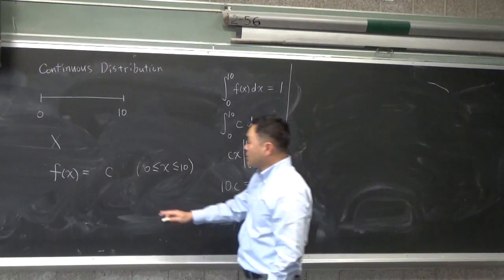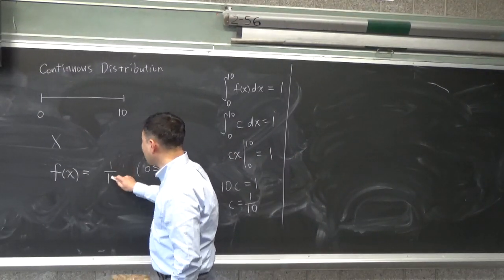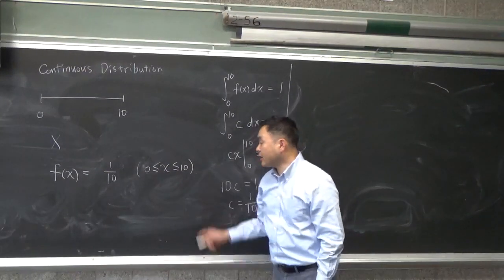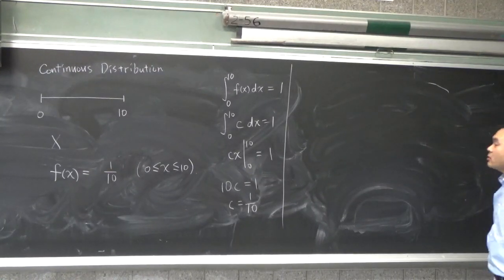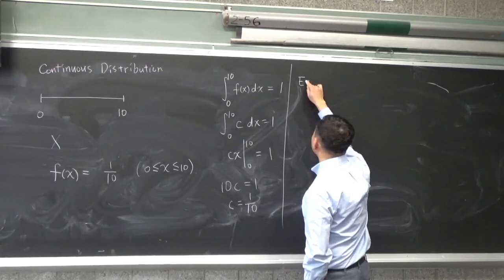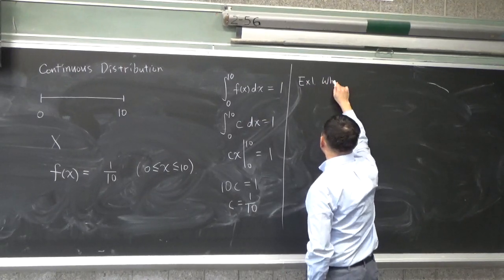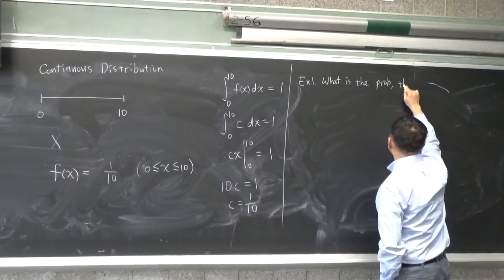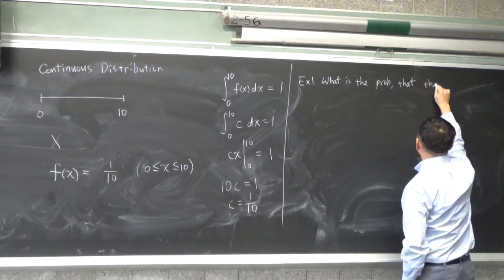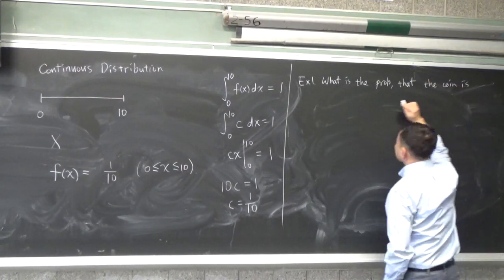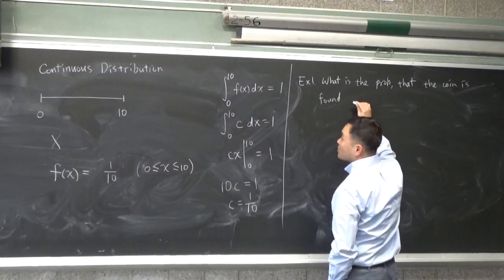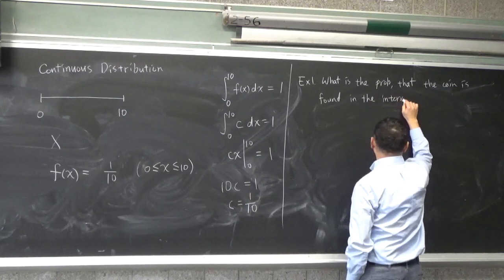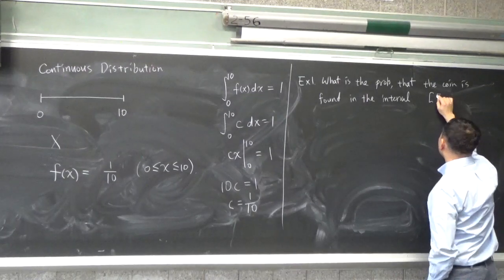So now that we know that the probability distribution function would be 1 over 10 from x from 0 to 10, you can ask several questions. Let's see. Example 1. What is the probability that the coin is found in the interval, say, 5 to 8?